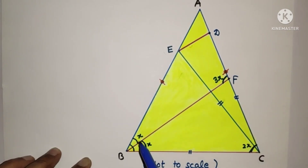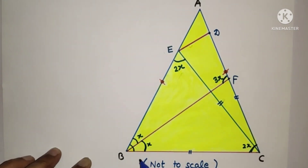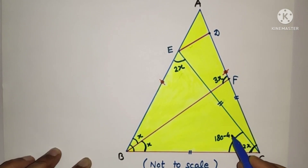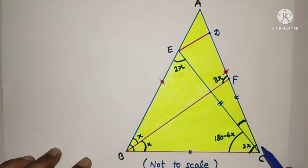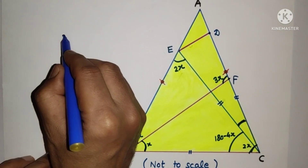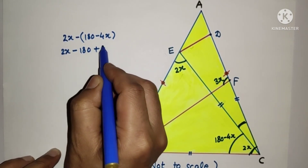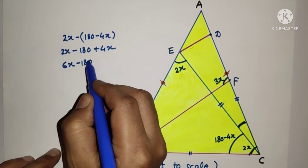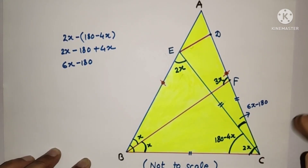Since BC equals CE, triangle BCE is isosceles, so the base angles are equal — both are 2x. Therefore the remaining angle at E inside that triangle is 180 minus 4x. The whole angle ACB is 2x, so the remaining portion of angle DCE is 2x minus (180 minus 4x), which simplifies to 6x minus 180.